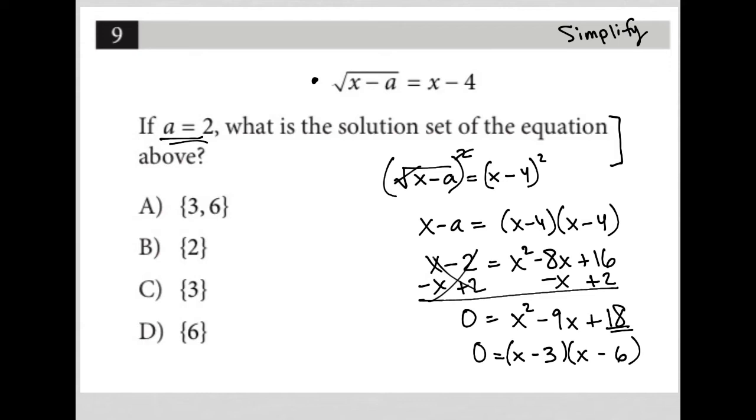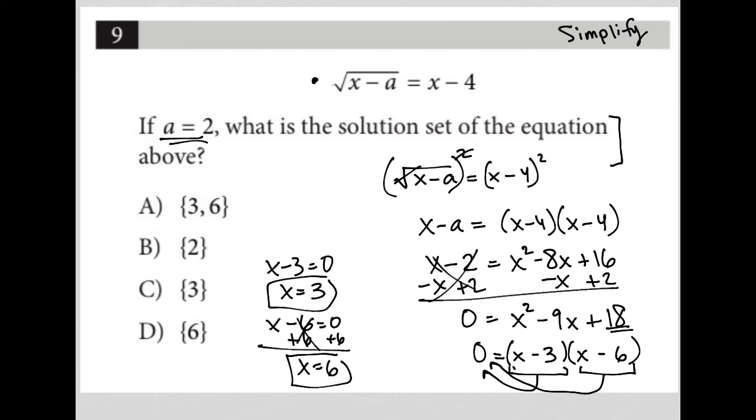This tells me that x minus 3 can equal 0. I just set each individual binomial equal to 0 separately. x minus 3 can equal 0, in which case I get x equals 3. But then also, x minus 6 can equal 0, in which case I get x equals 6. That would seem to tell us that the answer must be choice A, where we have 3 and 6.